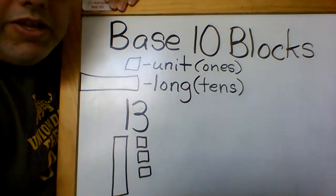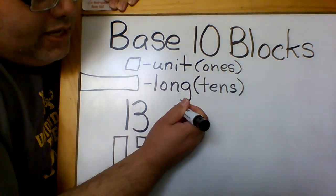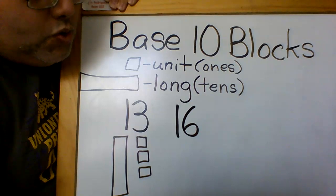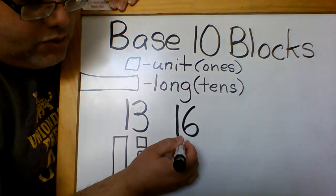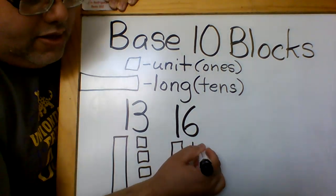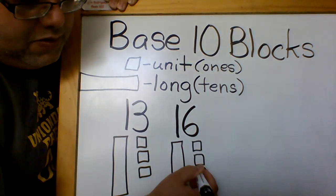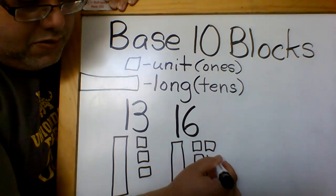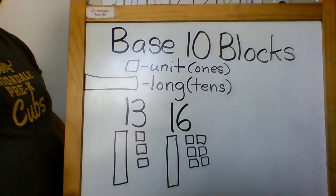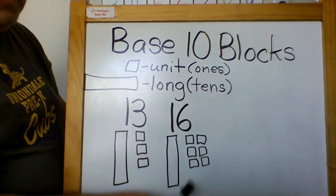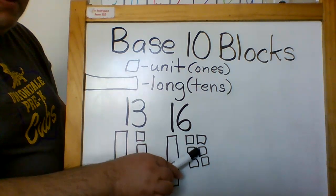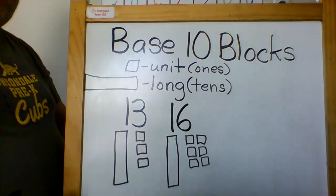I'm going to draw the next one with the next number. Say that I have another teen number called sixteen. If I were to do this with the base ten blocks — which is what's on your worksheet — you should have something like this and then six cubes. So this says: ten, eleven, twelve, thirteen, fourteen, fifteen, sixteen. That's what it actually says.